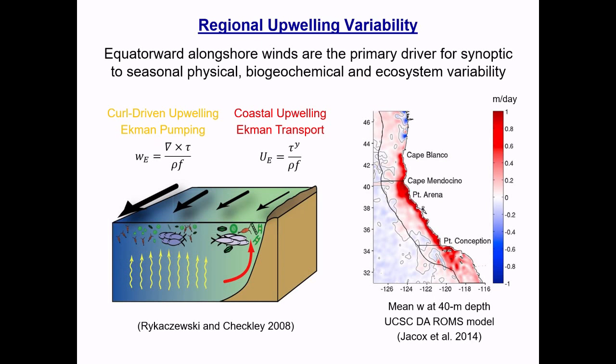Just to make sure we're all on the same page: the California Current is an upwelling system, but there are actually two types of upwelling. There's traditional coastal upwelling linked to Ekman Transport, occurring very close to shore. And because of the structure of the wind field, there's also curl-driven upwelling, or Ekman pumping, occurring over a broader region further offshore but much weaker in magnitude.